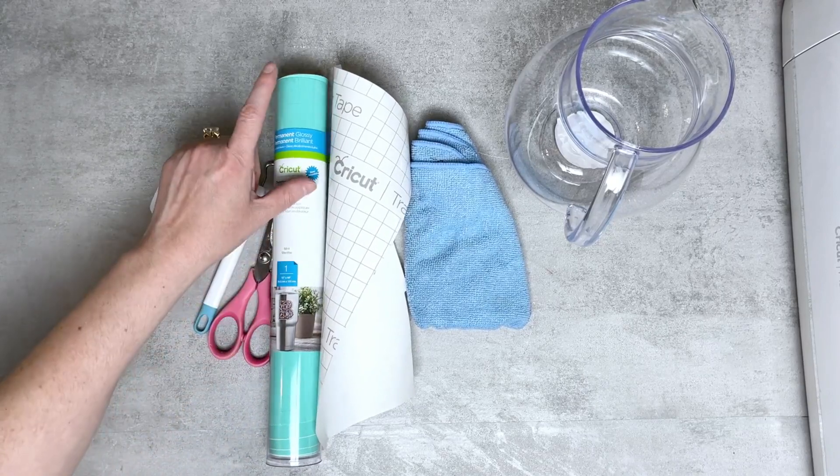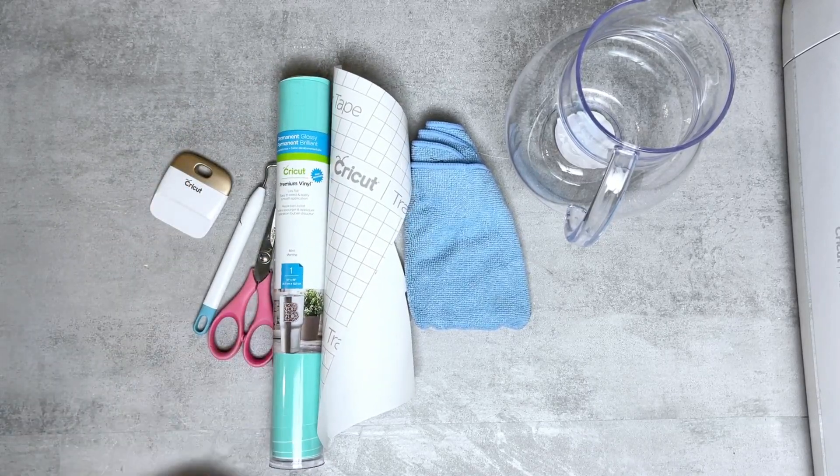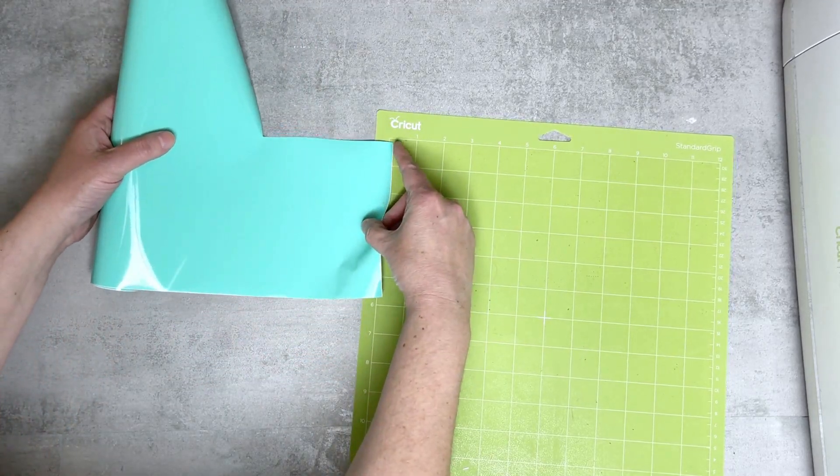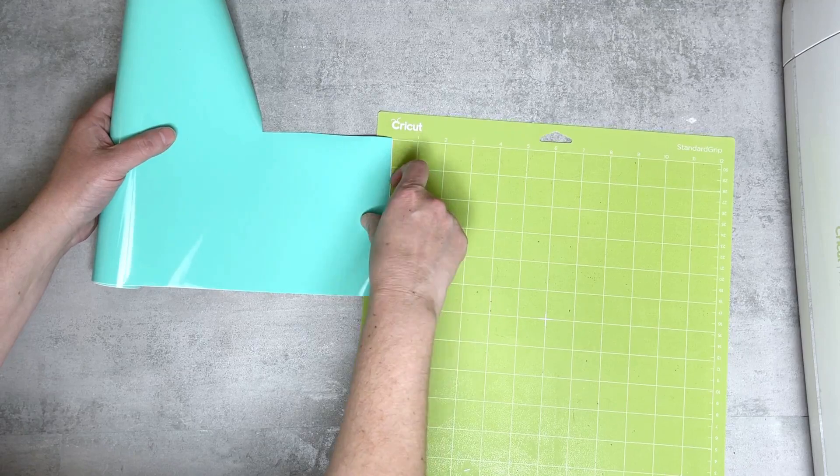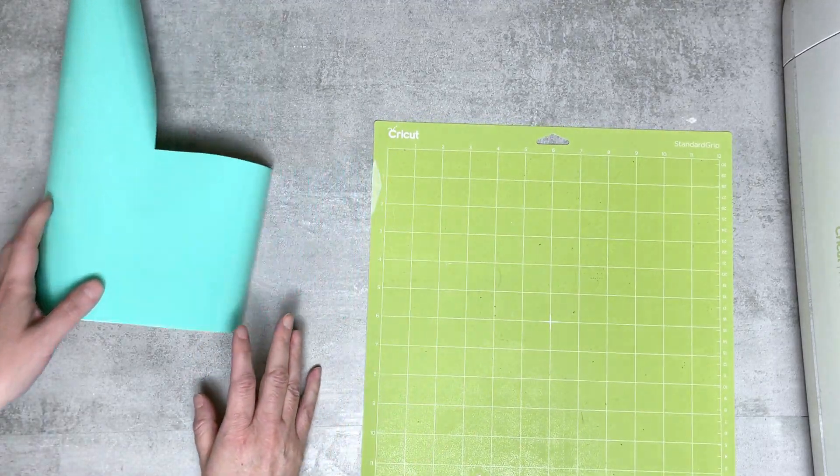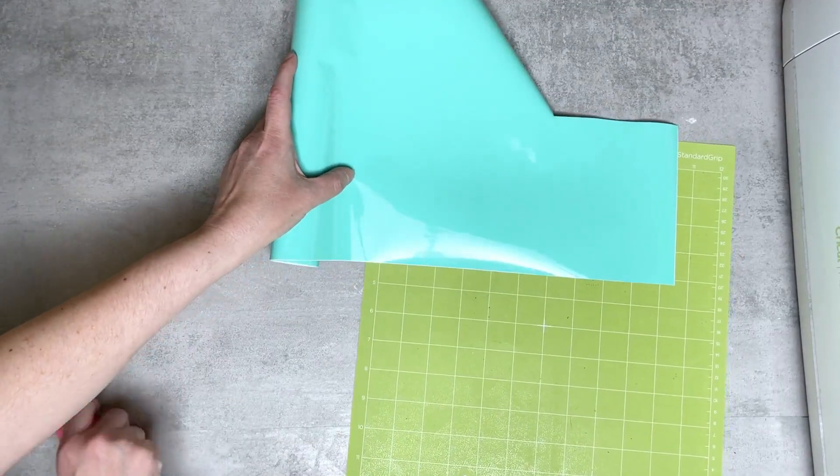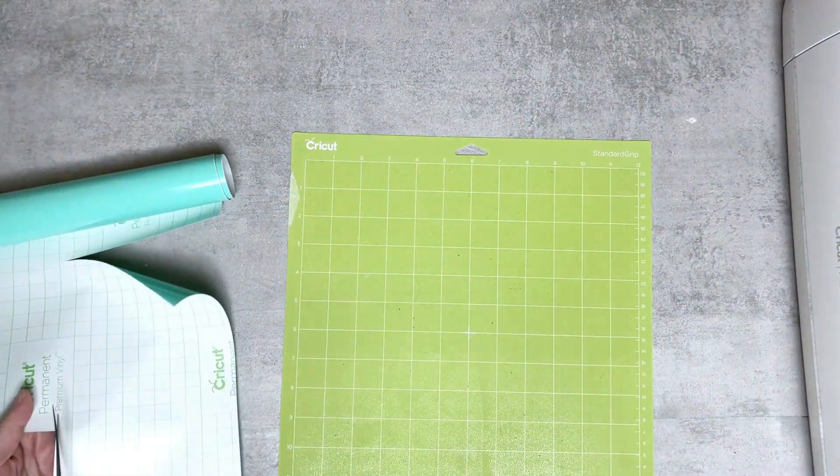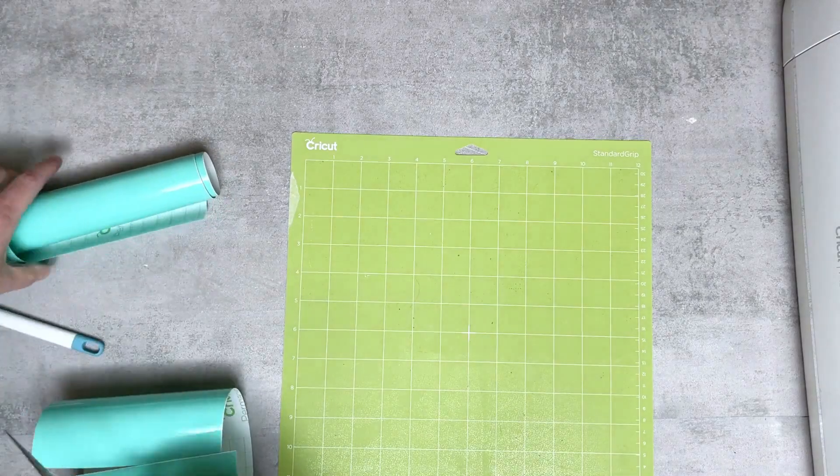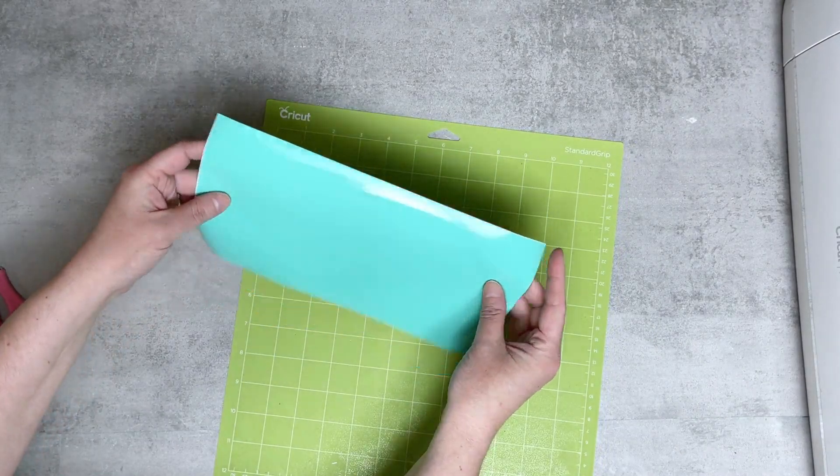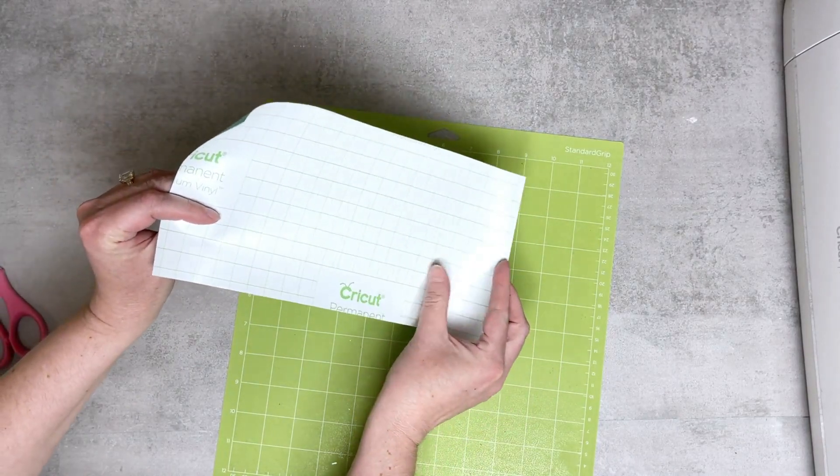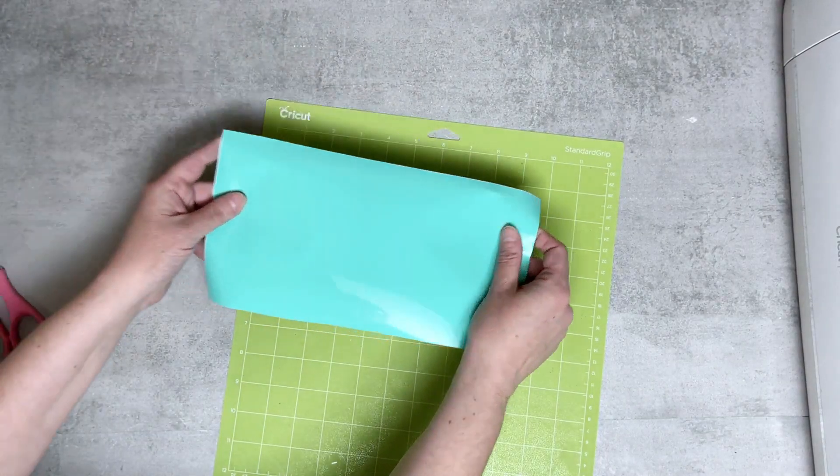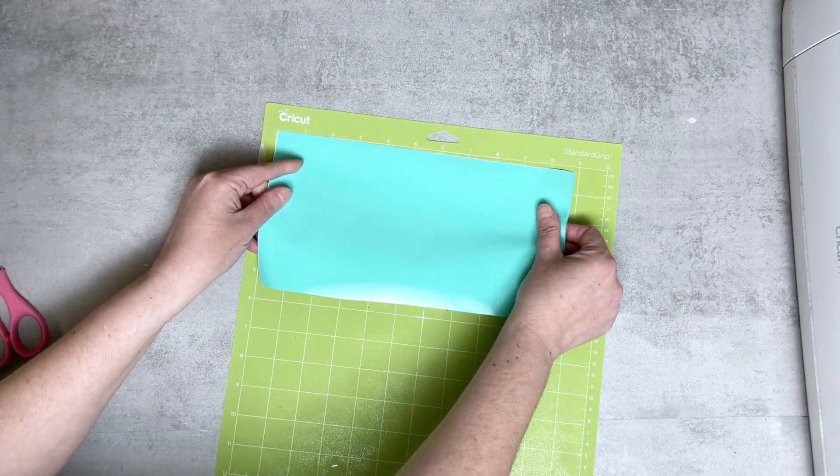So let's cut our premium vinyl in the color mint. Our first step is making sure that we cut a piece of the decal to the right size that we need and I'm going to go ahead and cut one and apply it to the mat. We're using premium vinyl so it has a grid on the back. This helps you to line it up and also to cut it down if needed. We're going to line it up along the top of the mat here.